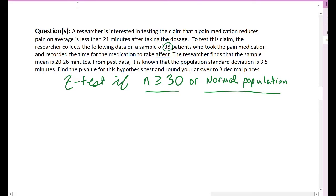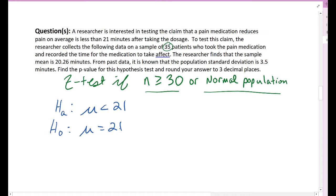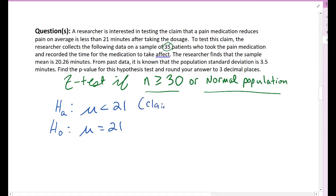The first step is to set up the hypotheses. We are testing the claim that the pain medication reduces pain on average in less than 21 minutes, so the mean time is less than 21 minutes. This is our claim and it is the alternative hypothesis: H_a: μ < 21. The null hypothesis is H_0: μ = 21.